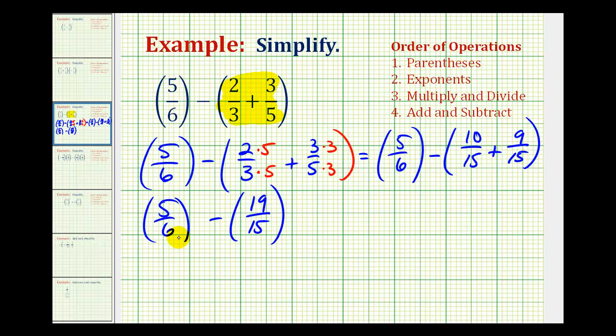And now the last step is to determine this difference. So now we need to determine the least common denominator with a denominator of six and fifteen. We want the smallest number that is divisible by both six and fifteen, or the least common multiple of six and fifteen. And that would be thirty.